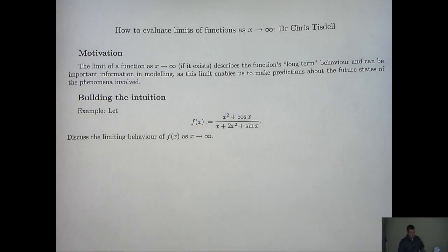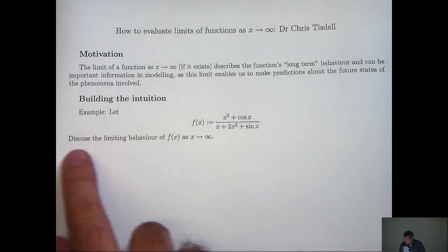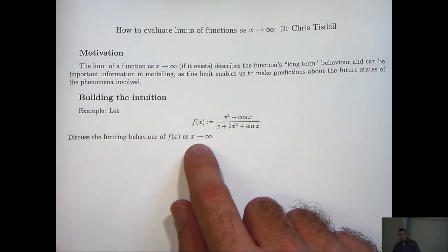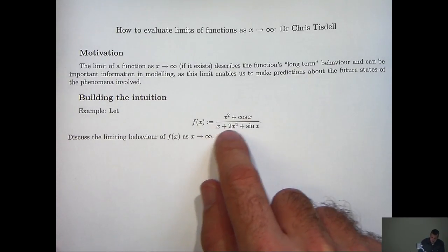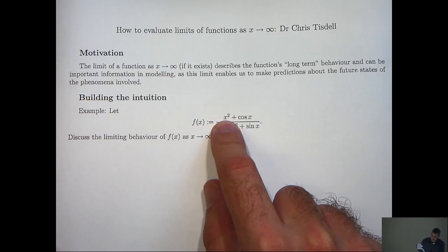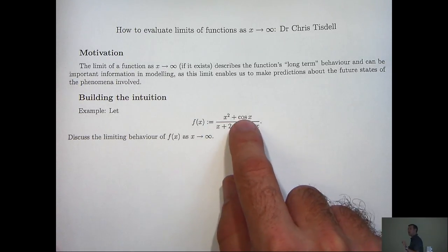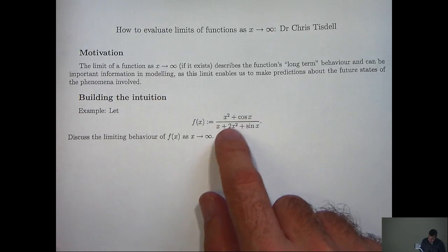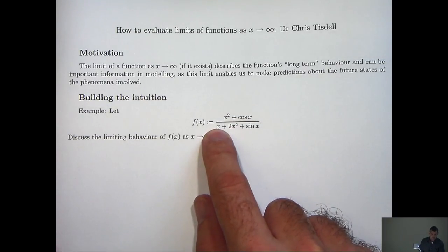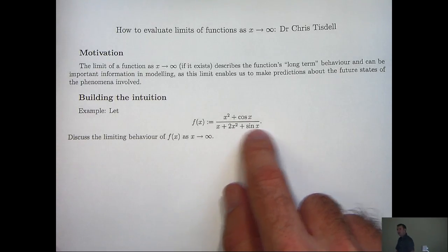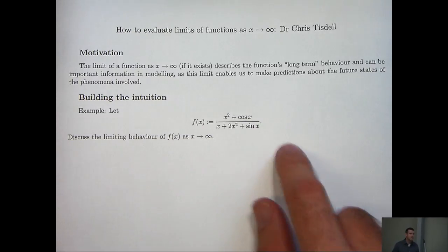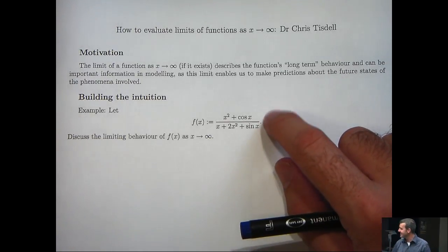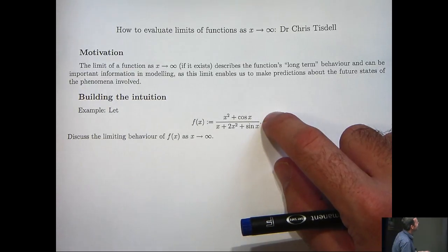Alright, let's build our intuition with a specific example. Here we've got a function and we're asked to discuss the limiting behaviour as x approaches infinity. Let's deconstruct this. If I naively look at the limits of the individual terms: the limit of x² as x approaches infinity tends to infinity; the limit of cos(x) doesn't exist because cos(x) oscillates between −1 and 1; the limit of x is positive infinity; the limit of 2x² is similarly positive infinity; and the limit of sin(x) as x goes to infinity again doesn't exist. So in its current form, this is not a great form for taking the limit.